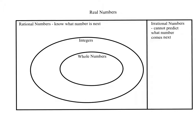Those real numbers are split into two classifications. We have rational numbers, which are most of the numbers you can think of — fractions, decimals, whole numbers, negative numbers, positive numbers. In higher-level math, rational often just means fraction. But even a decimal like 2.7777 repeating is considered rational because you always know what number comes next. So 2.7 repeating — I know it's another 7. 2.5 is also rational. 1/3 is rational. Those are all rational numbers.